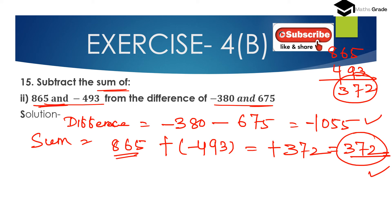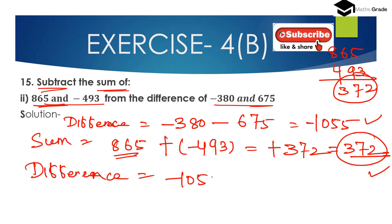Now difference is minus 1055 and sum is 372. We have to subtract the sum of 865 and minus 493 from the difference of minus 380 and 675. So we subtract 372 from minus 1055: minus 1055 minus 372. When we add two integers with equal sign, we have to add the integers without sign first.